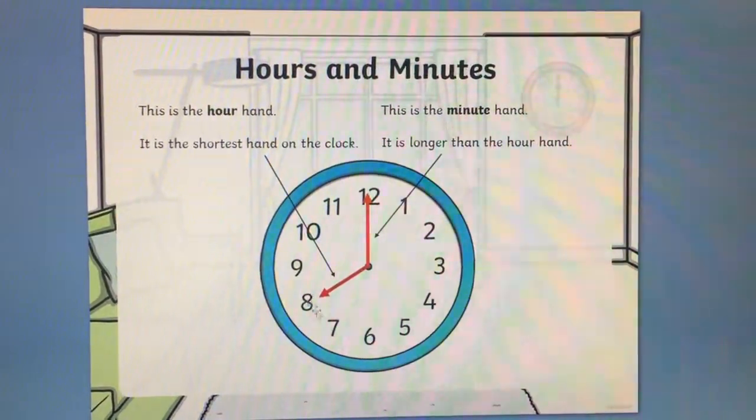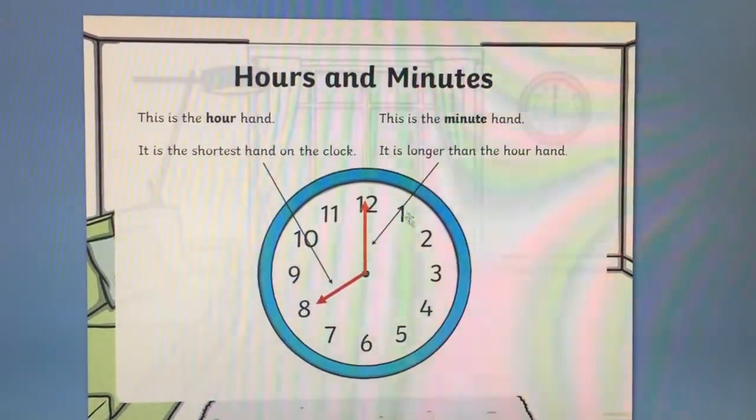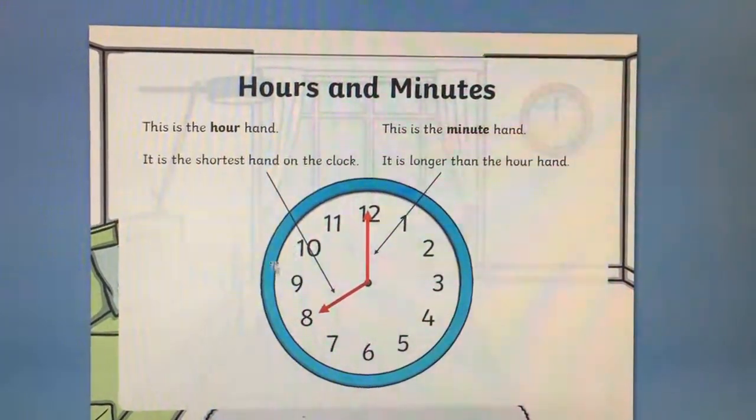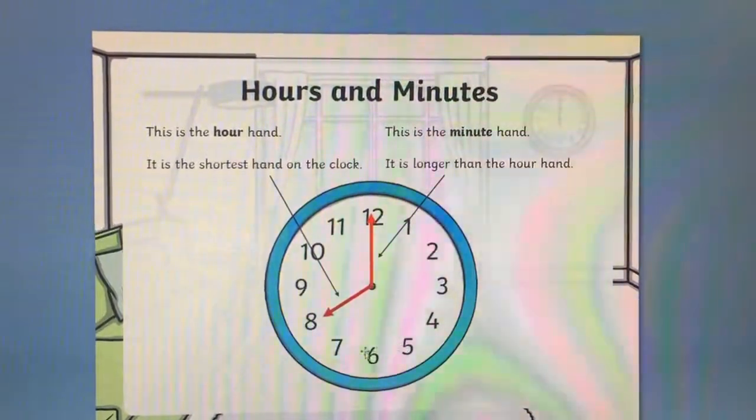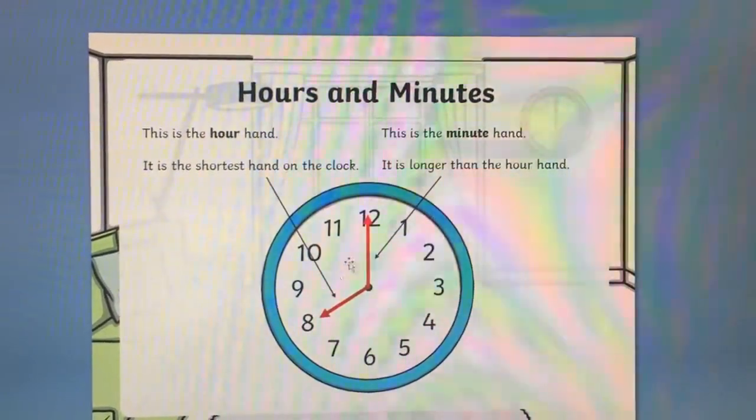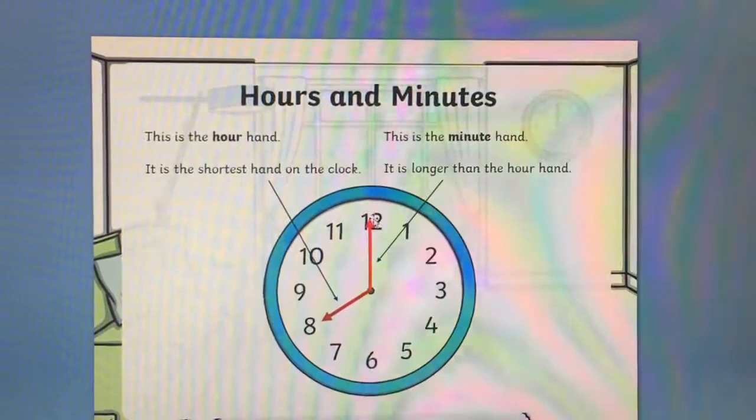We start with the clock. You can see all the numbers starting at 12. Now this is the first word I want you to learn: clockwise. If you're going this way, going to the right, it's clockwise. Always and ever.